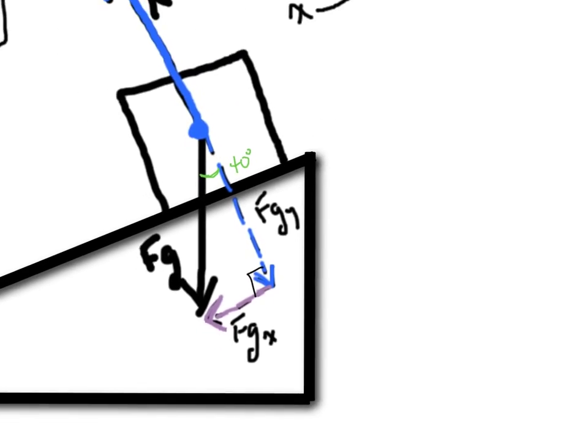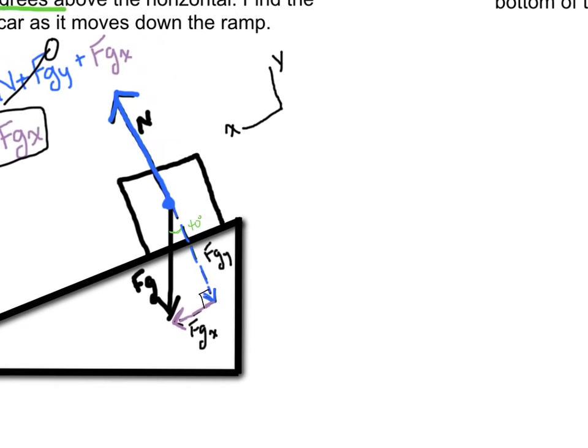And so any time you're looking for Fg in the y for a problem like this one with an inclined plane, you can use cosine of theta. So I have the force of gravity in the y is equal to mass times gravity. Any time we're trying to calculate force of gravity, we just use F equals ma. And the acceleration due to gravity is a constant, 9.81. So I've just rearranged it to show that. If I'm calculating Fg in the x, I can use sine of theta.